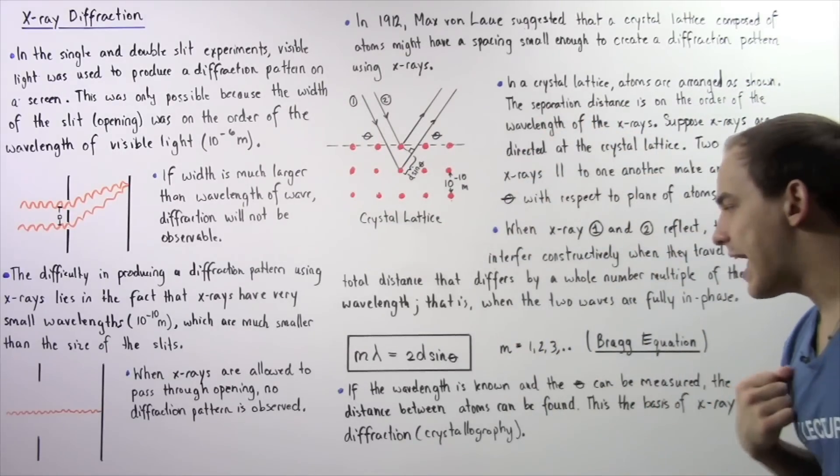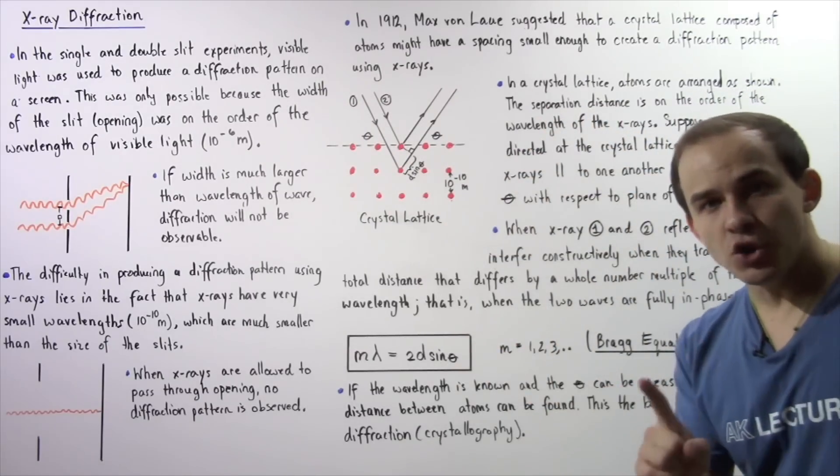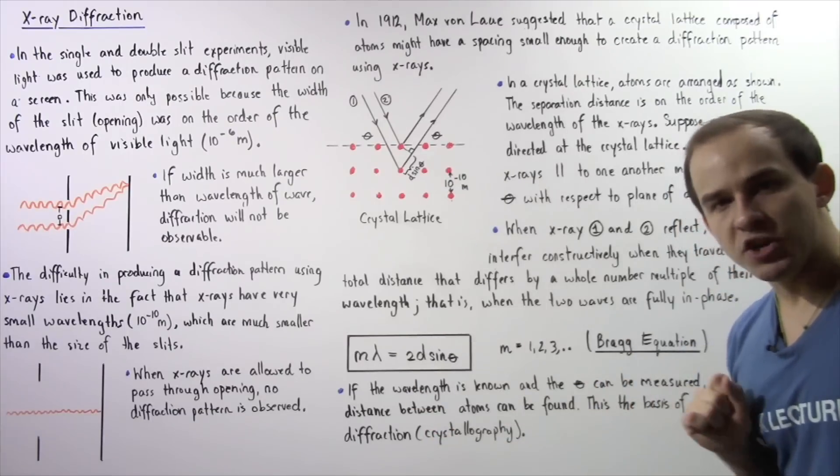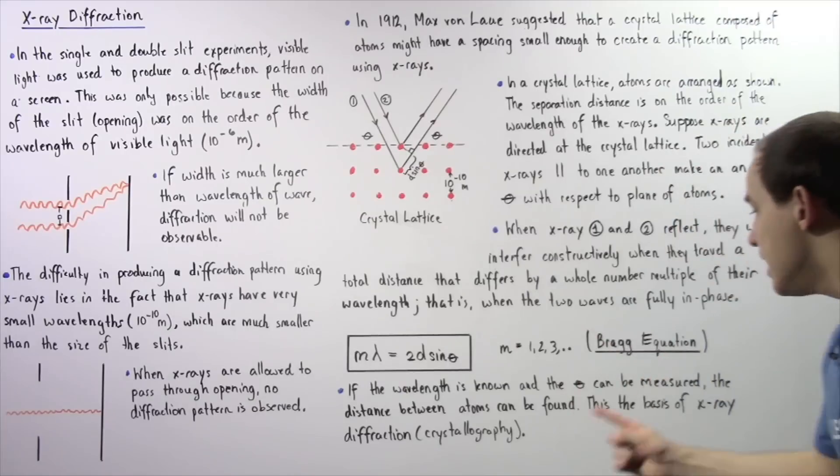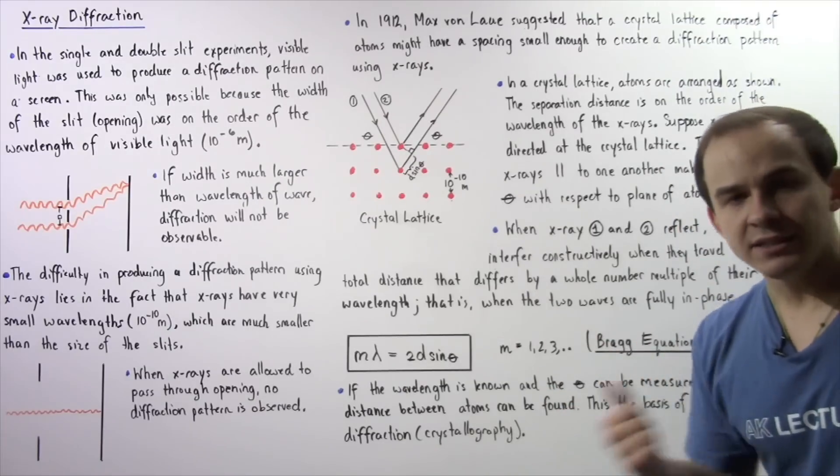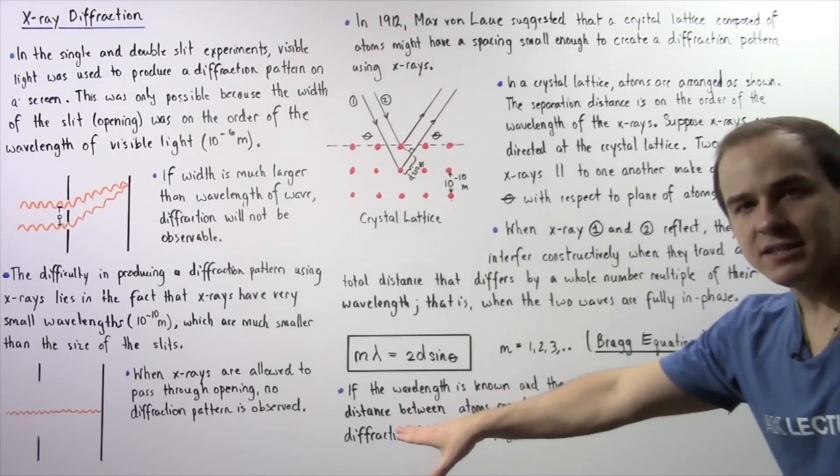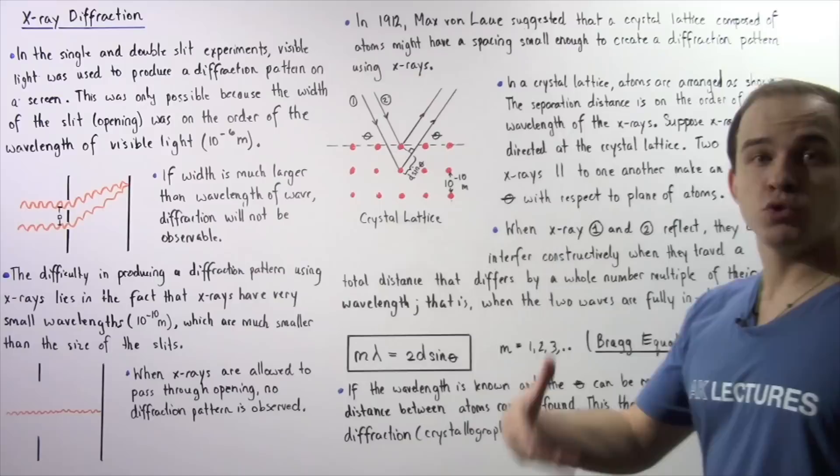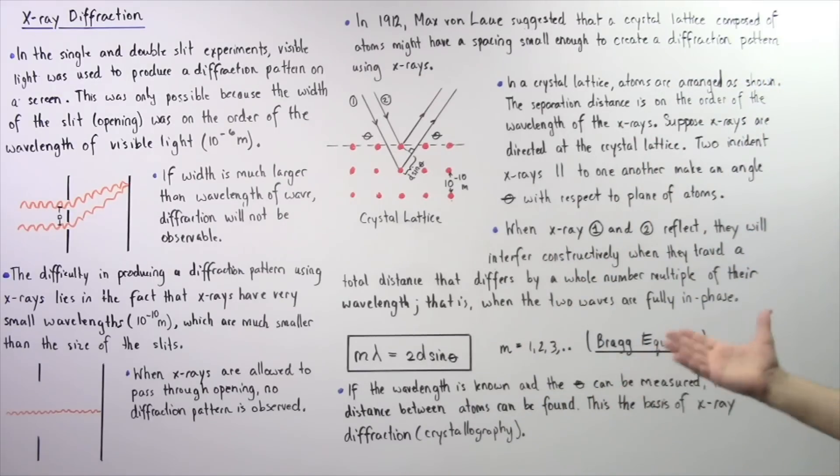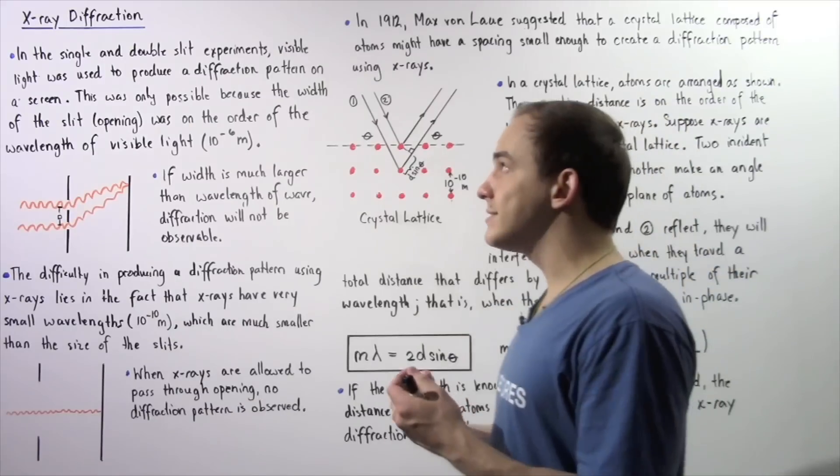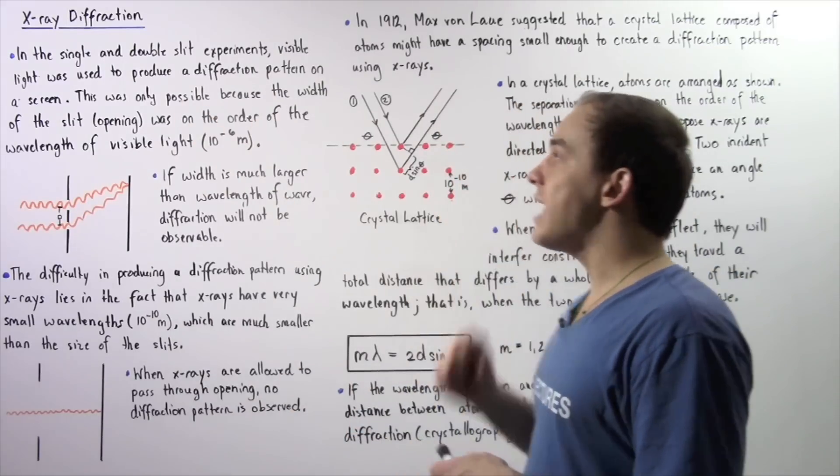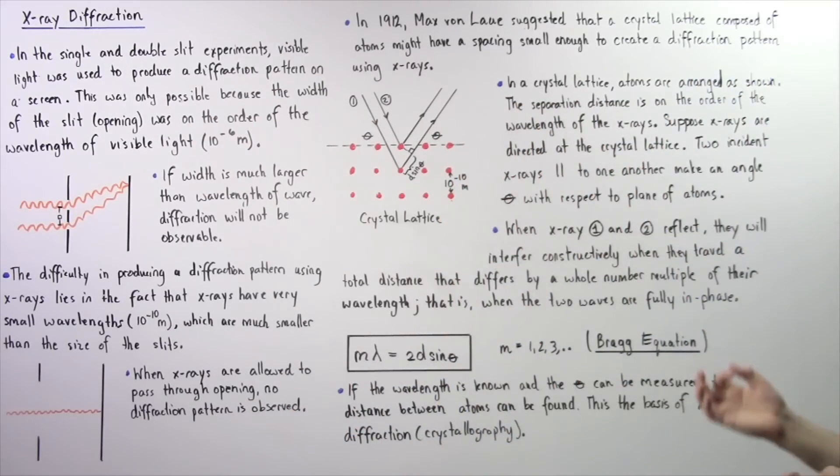Once again, this equation is useful because of the following reason. If the wavelength is known and the angle theta can be calculated, then the distance, the separation distance between any two atoms in our structure, can actually be determined. This is the entire basis of a process known as X-ray diffraction or X-ray crystallography.